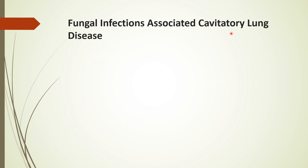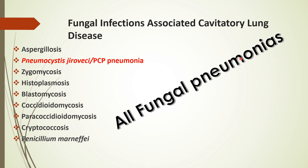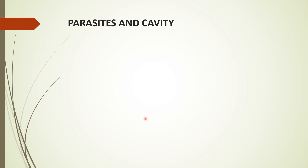Regarding fungal infections causing cavitary lung disease, there are many causes: aspergillosis, PCP pneumonia, zygomycosis, histoplasmosis, blastomycosis, and so on. The easy way to remember: any fungal pneumonia can cause a cavity. For parasitic conditions causing cavity, there are two: Paragonimus westermani and hydatid cyst.